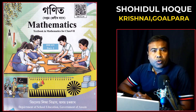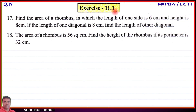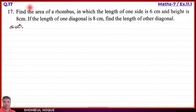Mathematics Class 7, new book part 2, Exercise 11.1, English medium, question number 17 and 18. Question number 17: Find the area of a rhombus in which the length of one side is 6 centimeters and height is 8 centimeters. If the length of one diagonal is 8 centimeters, find the length of the other diagonal.